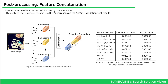We also merge retrieval features acquired from WBF boxes using the Feature Concatenation method. Since we have 18 retrieval models, we experiment with various combinations of models and summarize some of the results on Table 5. Compared to the base model, the Feature Concatenation method raises retrieval performance with meaningful gains on both top-10 validation and test results.